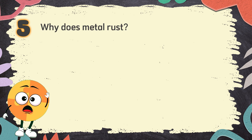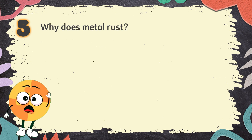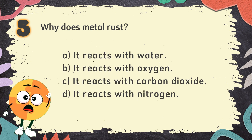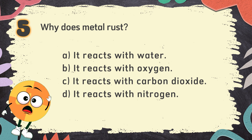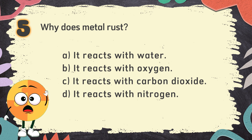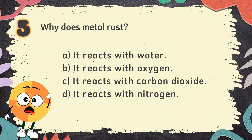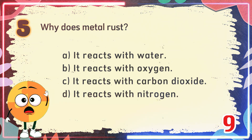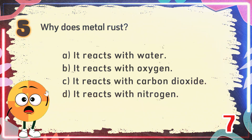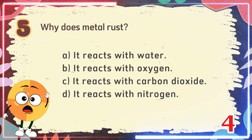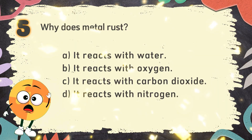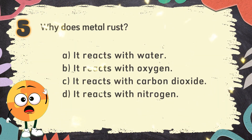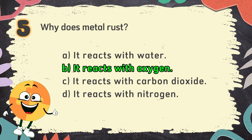Number 5. Why does metal rust? The choices are: A. It reacts with water, B. It reacts with oxygen, C. It reacts with carbon dioxide, D. It reacts with nitrogen. The correct answer is B. It reacts with oxygen.